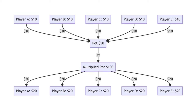The Pareto-optimal result, however, is for all players to contribute their full endowment, and each receives back their multiplied contribution. The Pareto-optimal result is not stable, however, as each player has an incentive to defect and contribute nothing.